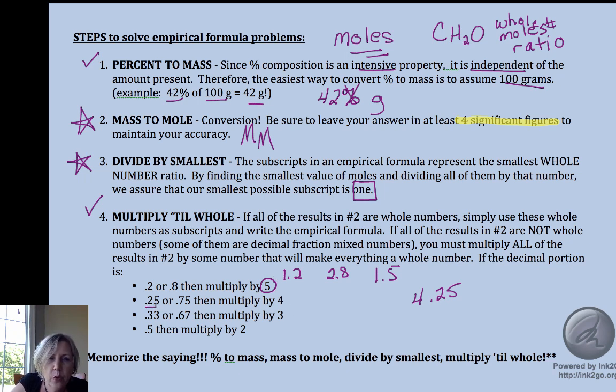If you have a quarter or three quarters, we're going to multiply everything by 4. A third or two thirds will multiply by 3. 0.5 will multiply by 2. If it's within a tenth, you'll just be able to round.